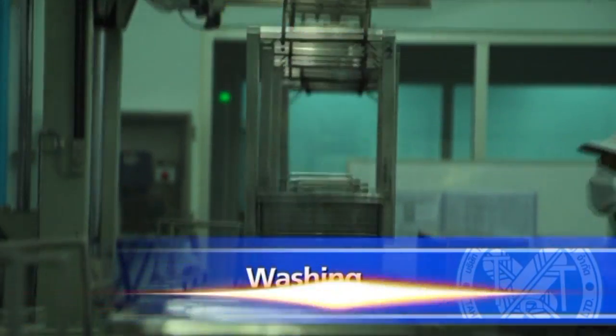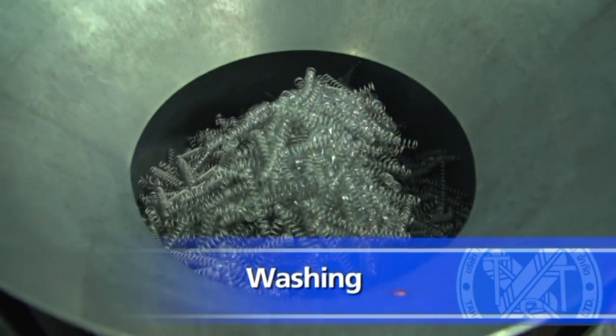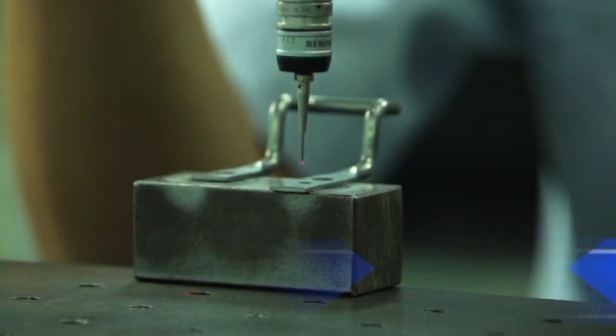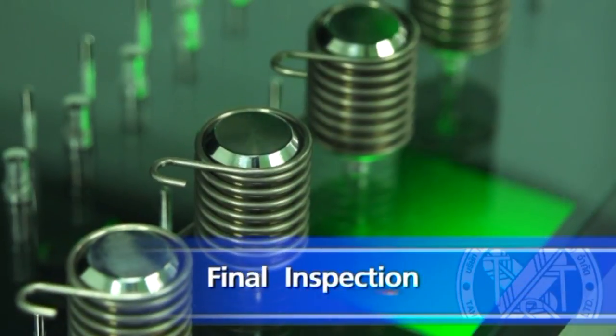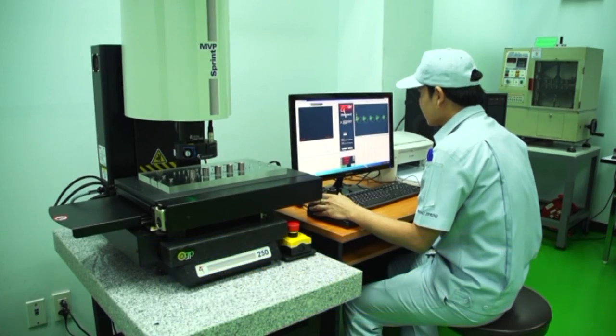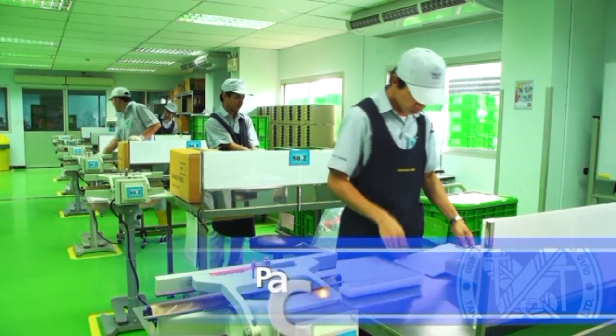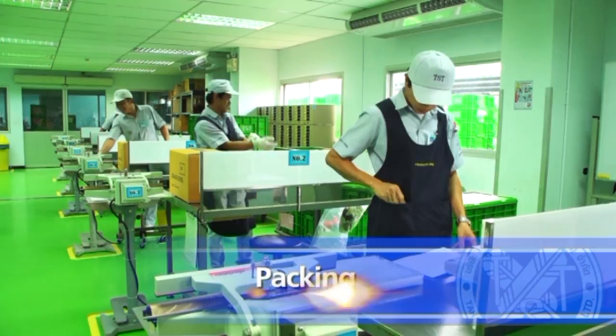Washing: produced parts are cleaned using chemical. Final inspection: each production lot is inspected with the standard limit. Packing: produced parts are packed using standard weighing scale.